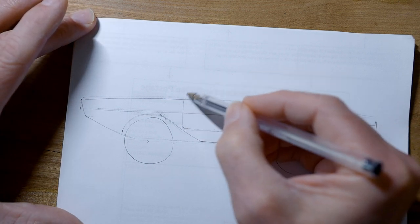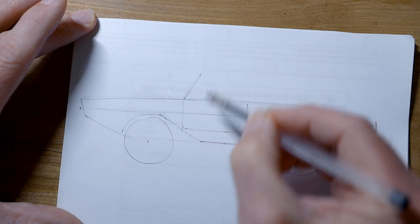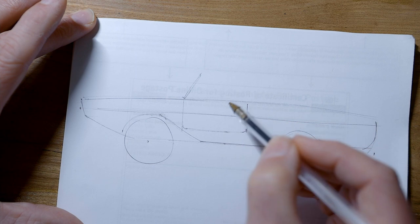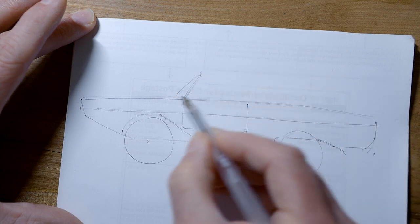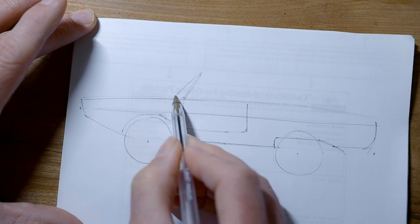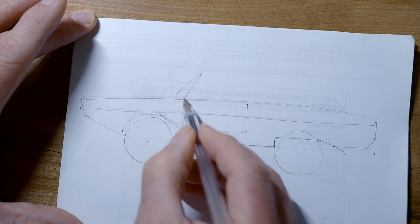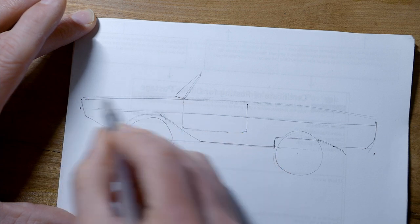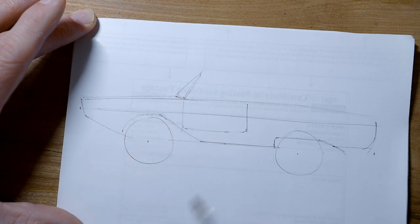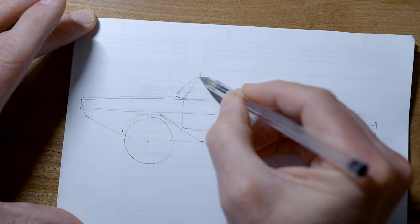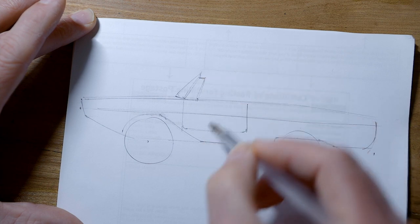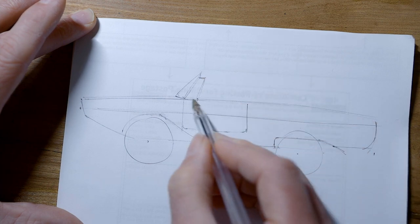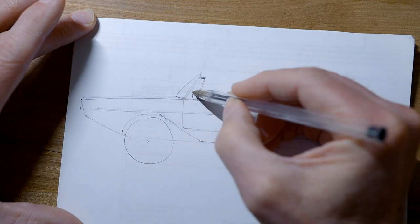And once you've got that, that gives you your windscreen, which has a slight tilt back on it. So there's the pillar for the windscreen and the actual glass itself, because it's curved, you can see sticking out in front. And then there's a sort of side light. Is that what they're called? Something like that, just behind. And inside there, you can see the steering wheel.